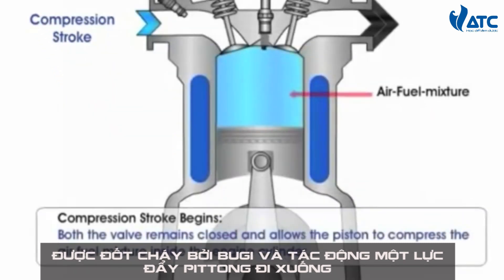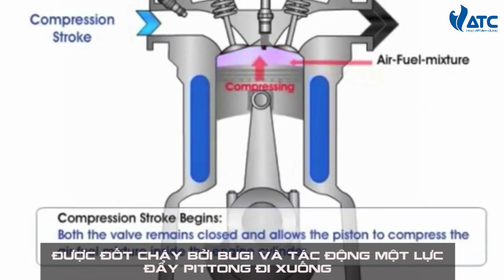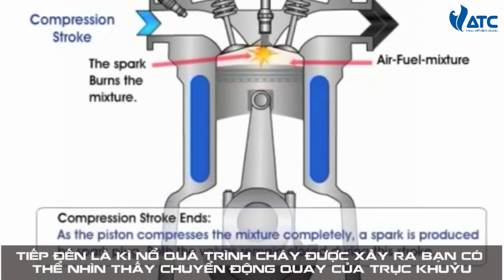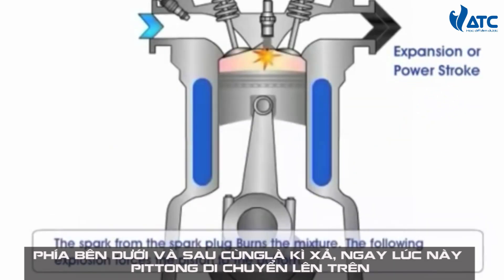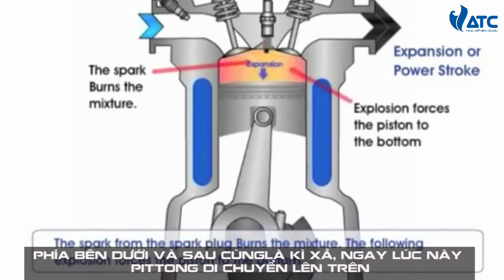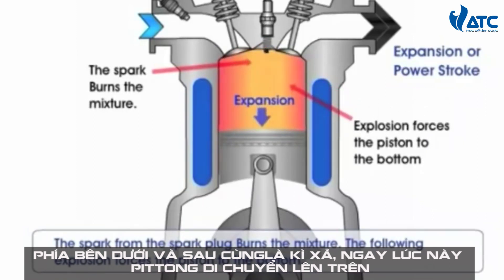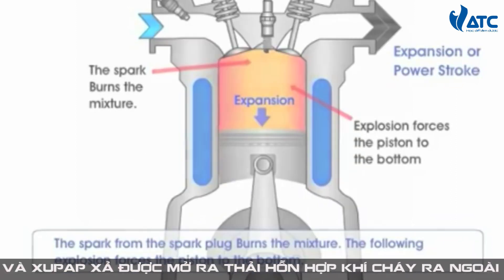Next is the compression stroke — as the piston goes up, it compresses the air and fuel. Now that it is compressed, it is ready for the explosion. The spark plug ignites, forcing the piston back down. This is the power stroke — the piston gets forced down when the explosion happens, and turns the crankshaft at the bottom.